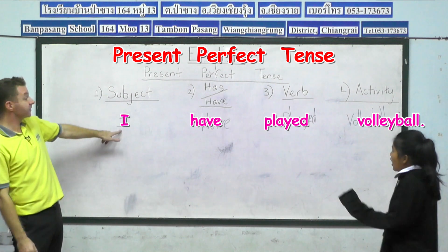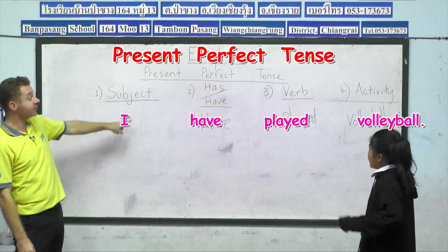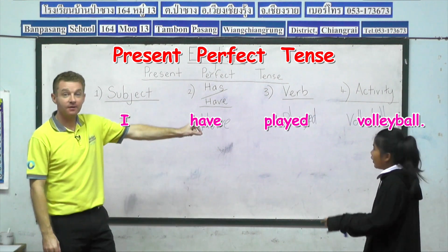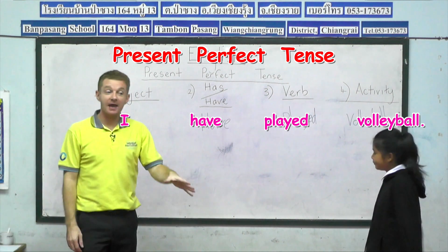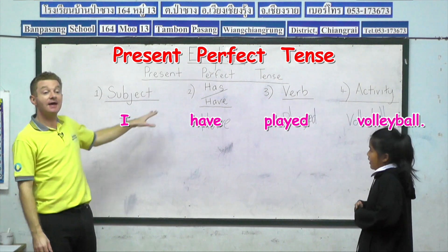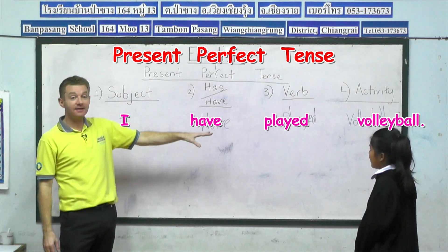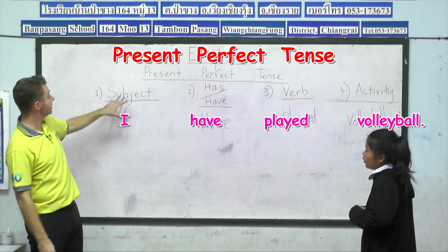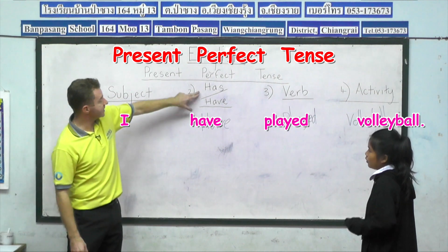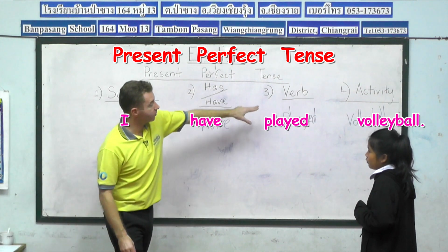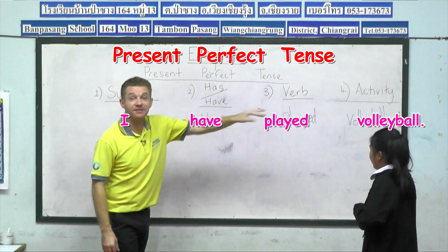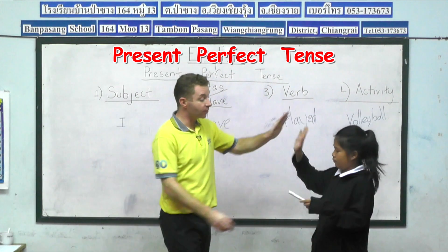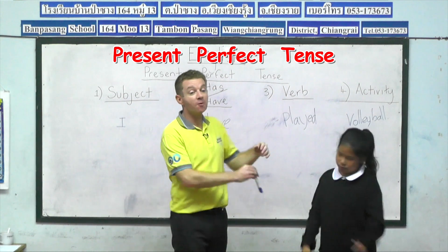So Lackau, can you say it? I have played volleyball. So all together guys: I have played volleyball. Following the structure: subject, has or have, the verb word and the activity. Lackau, that was brilliant. So a big round of applause for Lackau please guys.